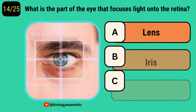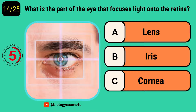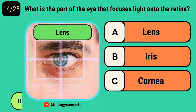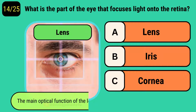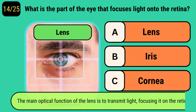What is the part of the eye that focuses light onto the retina? It is the lens. The main function of the lens is to transmit light, focusing it onto the retina.